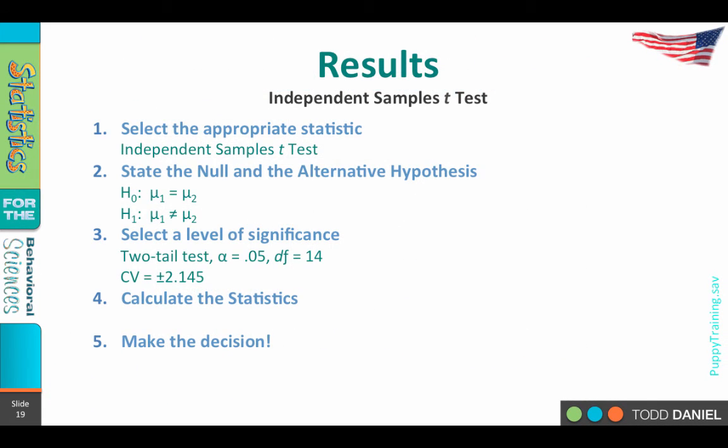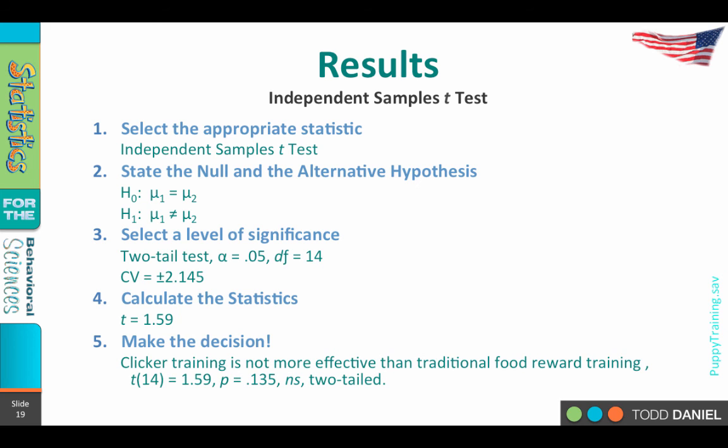So let's go back to our five steps. We have calculated the statistic. The t-value in this case is 1.59. So I would write t equals 1.59. And now it's time to make the decision. I'd do my full write-up, but I would conclude with something like this, that clicker training is not more effective than traditional food reward training. t with 14 degrees of freedom equals 1.59, p equals 0.135, ns, two-tailed test. Whether or not you include the two-tailed is kind of optional, but that's how we would write up the results for the independent samples t-test.